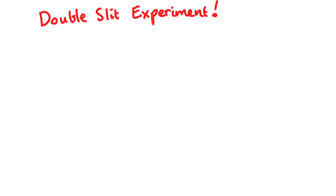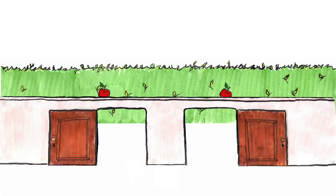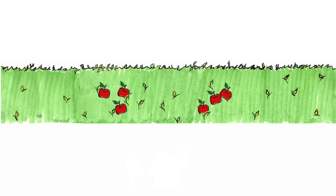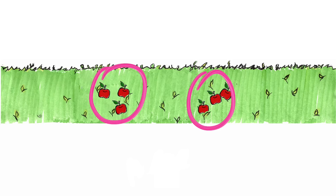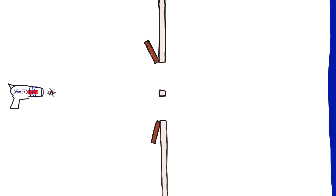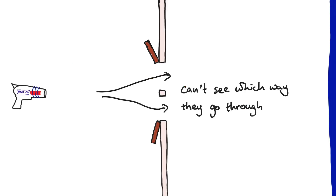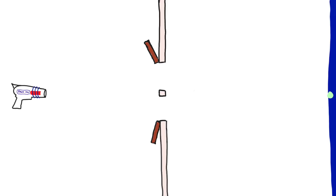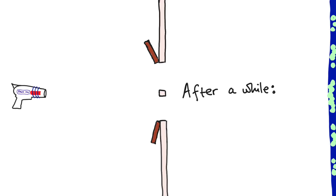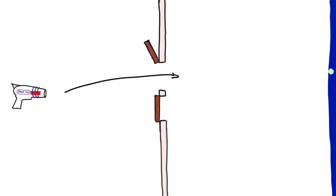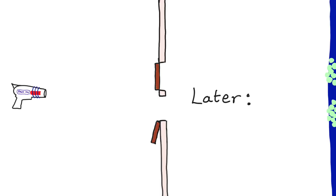Take for example the double slit experiment. When you shoot things one at a time through two doors, you'd expect that if it makes it through, it will go through one of those doors and end up somewhere behind it, so you eventually get two lumps. They decided to do this simple experiment with really small things like atoms. You shoot them one at a time, but you can't actually see them going in their path, so you can't see which door they went through. But you'd expect them to end up in the same two lumps. Only they don't – they end up in this weird pattern. Then they tried the same thing again, but this time they closed one of the doors randomly. Now the particle had to be going through just one door, and so it lands somewhere behind that door. And they're right – the final pattern is what they expected in the first place.